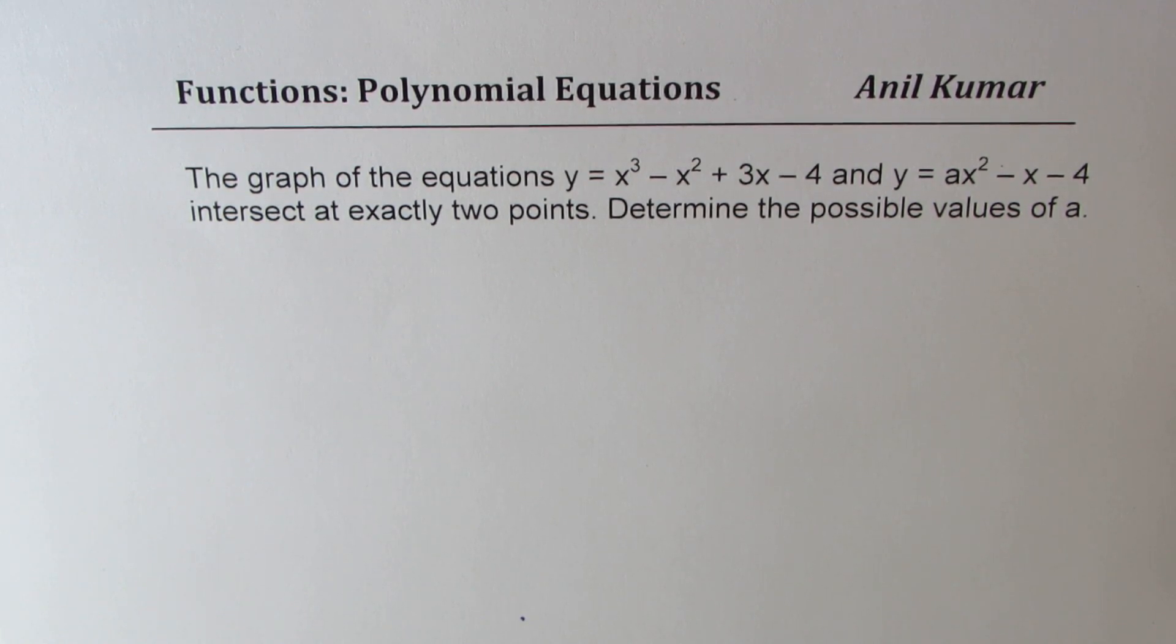I'd like to include this in that list. The question here is: the graph of equations y equals x cubed minus x squared plus 3x minus 4 and y equals ax squared minus x minus 4 intersect at exactly two points. Determine the possible values of a.